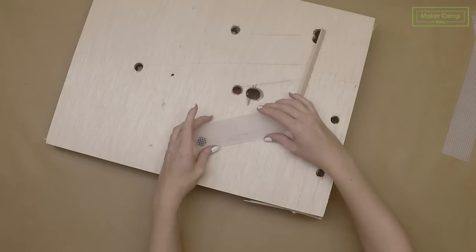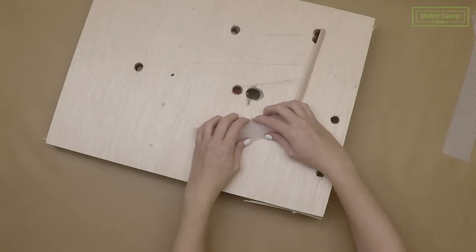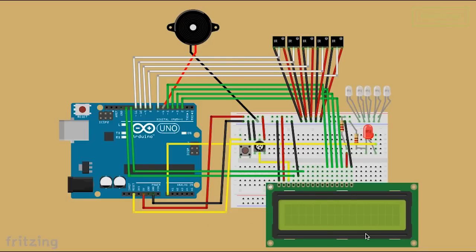Then, we'll begin adding our gameplay elements like our ball return channels, our sensors, light, buzzer, and an LCD screen. Then we'll wire everything up to an Arduino Uno.